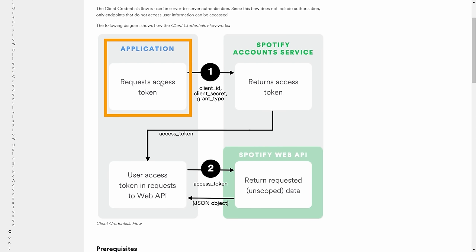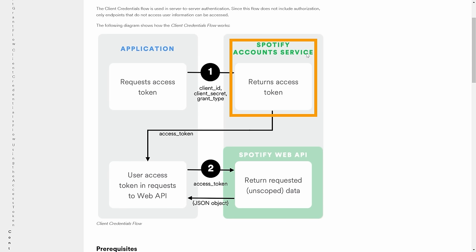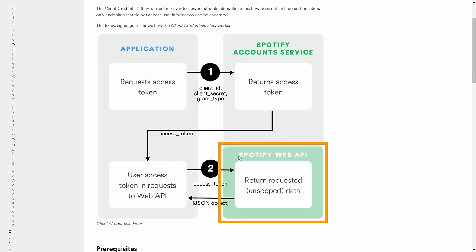We're using the client credentials workflow. There is another workflow for user credentials when specific users use your application. In our case, anyone who runs our Python script uses one set of credentials. The first thing we need to do is request an access token by sending our client ID, client secret, and a few other pieces of information to the Spotify accounts service — a different service than the main API. It returns a temporary access token with some expiry time, and with that token we can send requests to the Spotify Web API to get artist, track, album, and playlist information. If your token expires, you need to request a new one or use a refresh token.